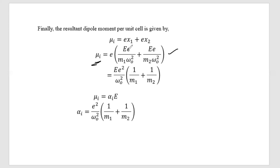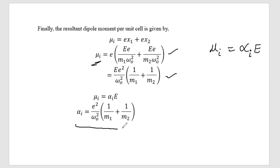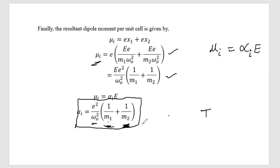Factoring out, mu_i equals (e²/omega-naught²)·(1/M1 + 1/M2). Comparing with the standard formula dipole moment equals alpha·E, we identify the ionic polarizability: alpha_i equals e² divided by omega-naught squared, multiplied by (1/M1 + 1/M2). Therefore, ionic polarization depends on the masses of the positive and negative ions and the angular frequency omega-naught, but not on temperature.